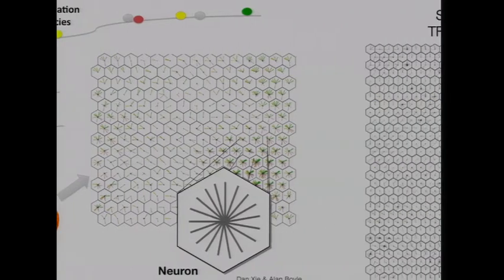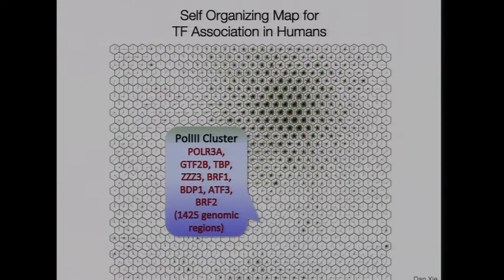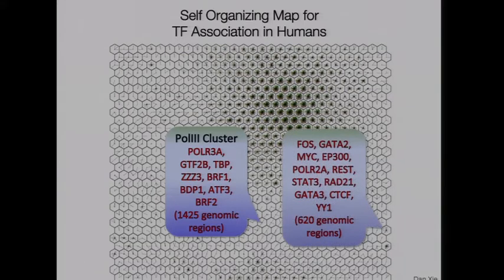First, you do this with humans — look at all 1 KB segments and see which ones like to be co-associated. When you look into the neurons, you see things that make sense. For example, in one neuron, nearly all Pol III components are together, binding near one another, as you'd expect. Here's an enhancer-type area with all these factors that like to be together. So you can start finding relationships — this is the regulatory code within an organism.